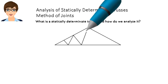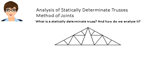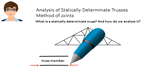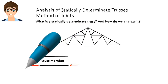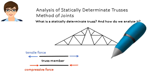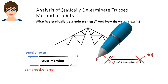A truss structure is an interconnected network of slender members, each capable of carrying an axial force only. The force is either compressive or tensile. Theoretically speaking, no shear force or bending moment is present in truss members.